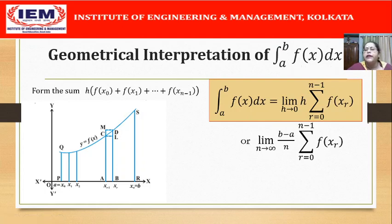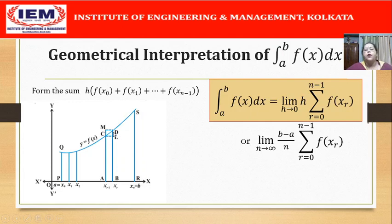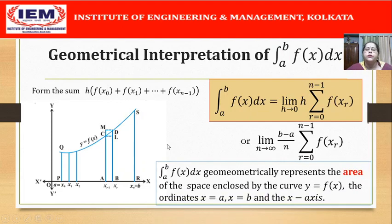What does this limit actually give us? The term f(xᵣ₋₁) · h gives the area of a rectangle, and there is a small error between the rectangle's area and the actual area under the curve. However, as n → ∞ and h → 0, the area of the rectangle under the limit coincides with the area under the curve. Summing all such rectangles — which is our integral ∫ₐᵇ f(x) dx — gives the area under the curve y = f(x), the x-axis, and the ordinates at x = a and x = b.